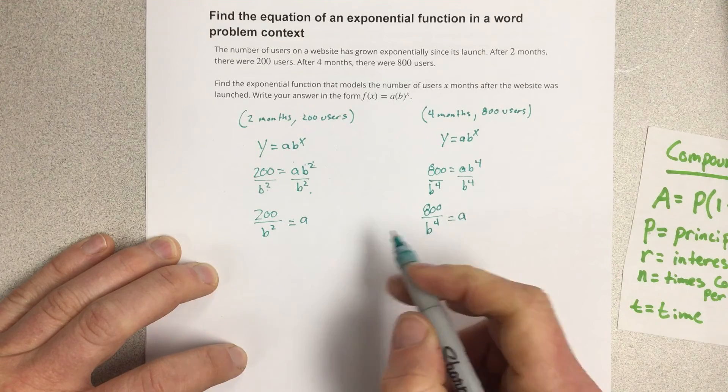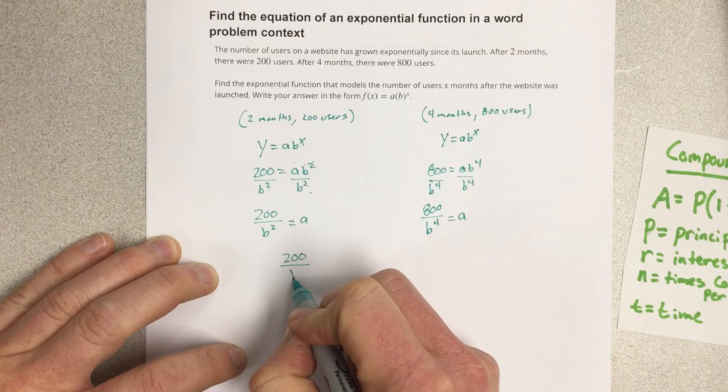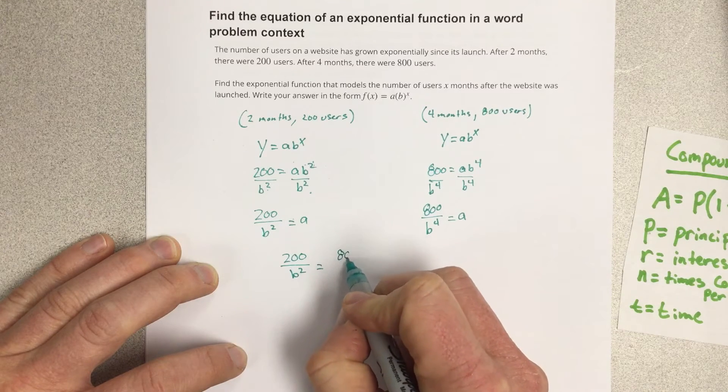Well, if both things are equal to a, then I can write that as 200 over b squared is equal to 800 over b to the fourth.